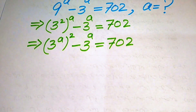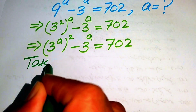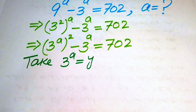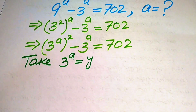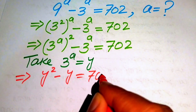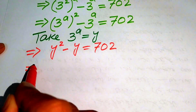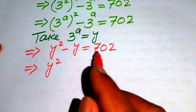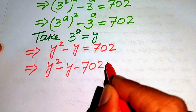In the next step, we convert this exponential equation into quadratic form. We take 3 to the power of a equals to y. When we substitute this, the equation becomes y squared minus y equals to 702. Moving 702 to the left hand side, we write it in standard form as y squared minus y minus 702 equals to 0.